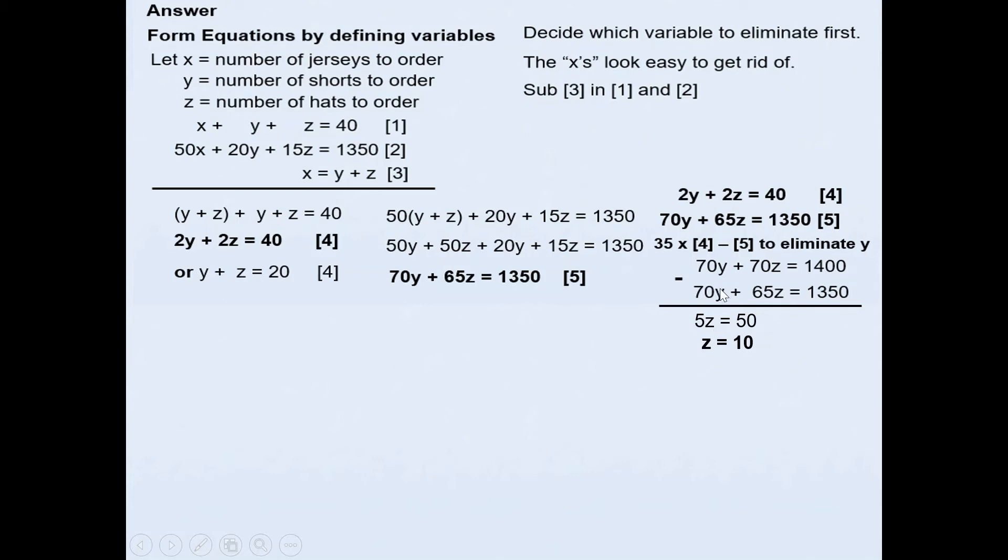Then you can substitute this z value back in equation 4 to solve for y. Substitute z = 10 in equation 4. That gives 2y + 2(10) = 40, so 2y = 20, which leaves you with y = 10.